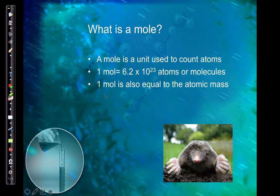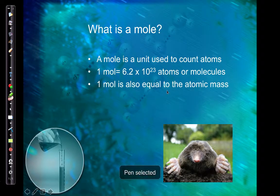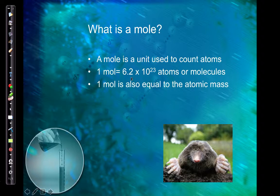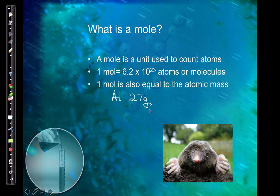So if I have one mole of a substance, that's going to be 6.02 times 10 to the 23rd atoms, molecules, or whatever it is we're talking about. If I have a whole mole of basketballs, that would be 6.02 times 10 to the 23rd basketballs. Now one mole is also equal to the atomic mass, so one mole of aluminum would weigh about 27 grams, which is also 6.02 times 10 to the 23rd atoms.